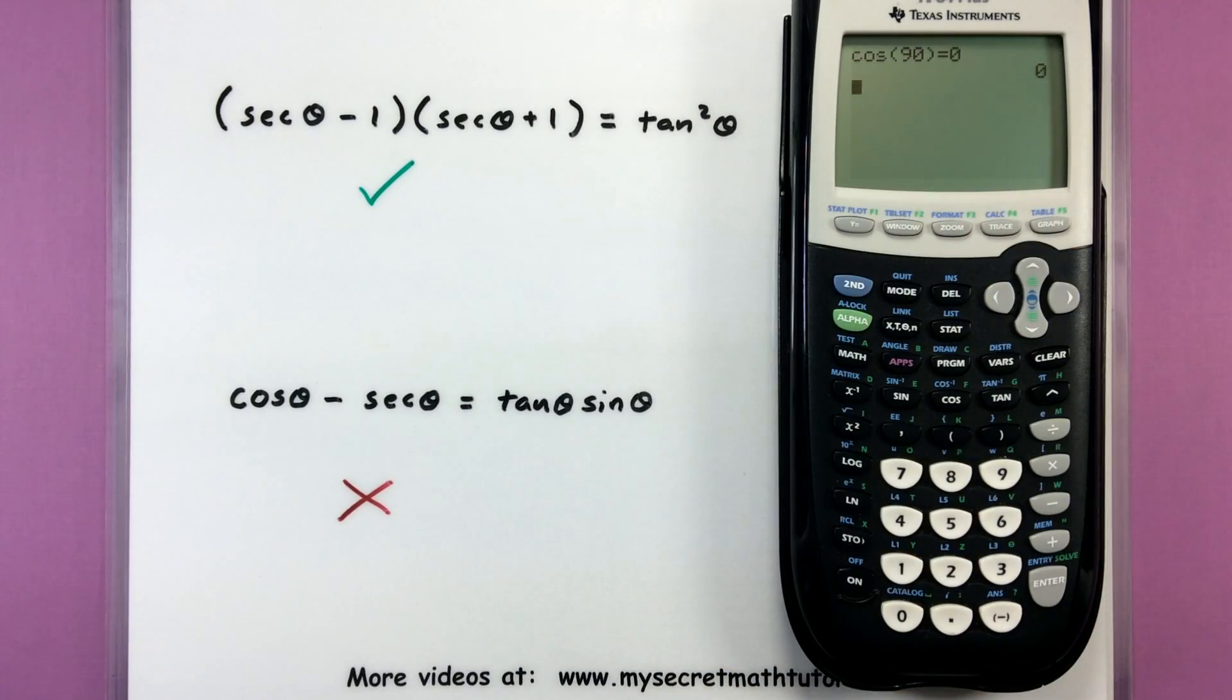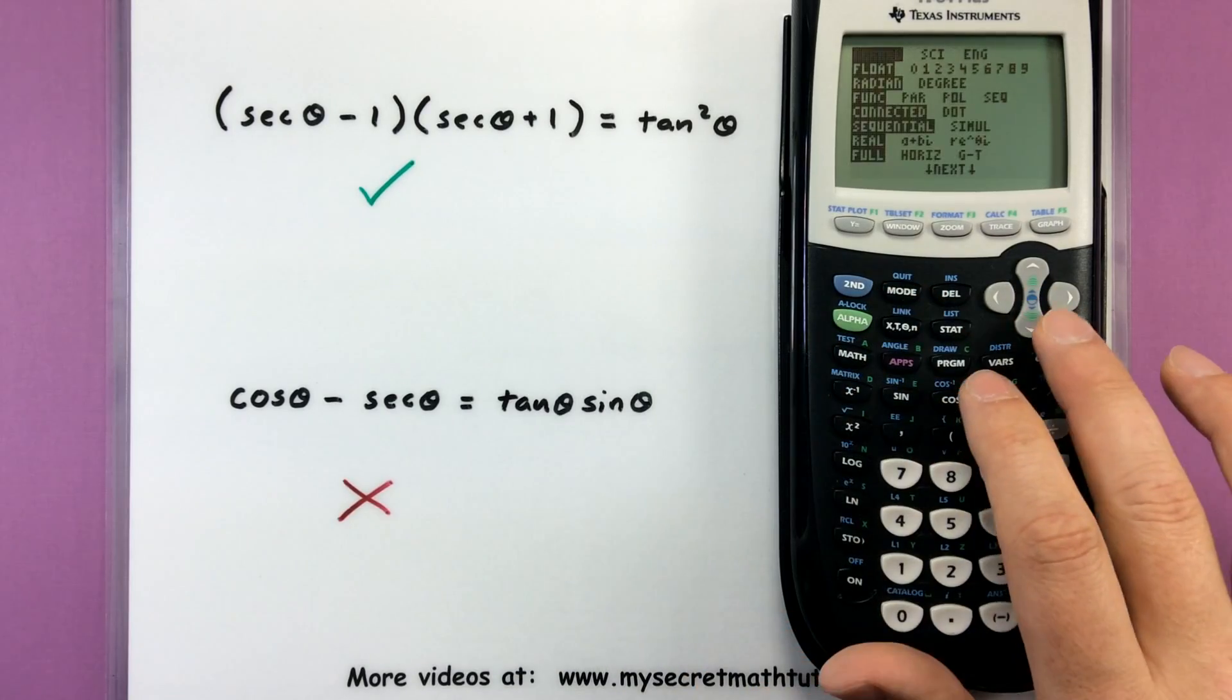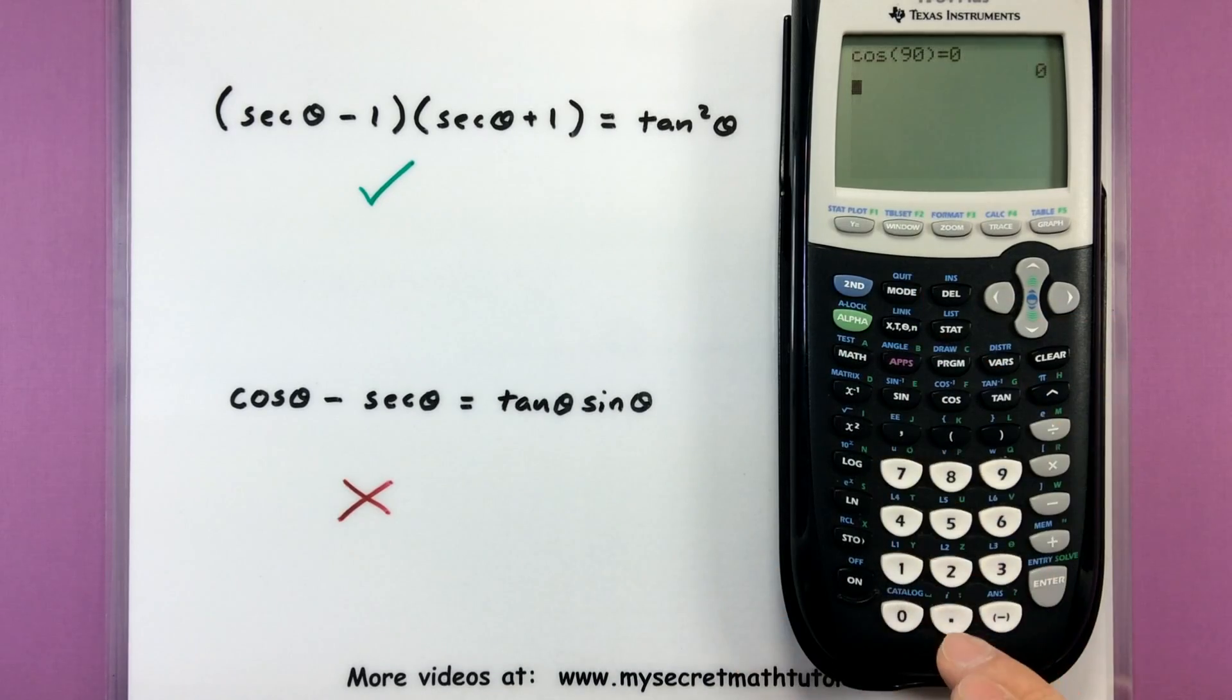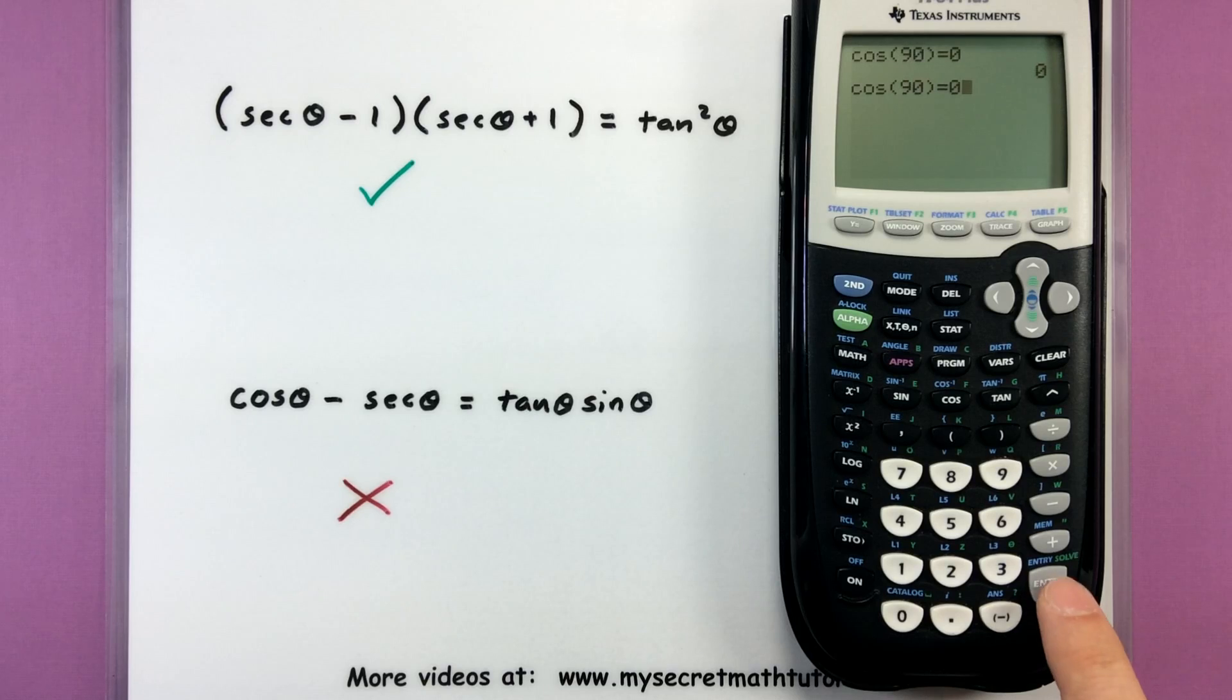So if you are verifying stuff like angles, you want to make sure that you're definitely in the correct mode. Let's switch it over to degrees again. So I can quit. And now when I try and verify, is cosine of 90 degrees equal to zero? Now the calculator will give me a yes, a one that indicates yes, that is true. Cosine of 90 degrees is zero.